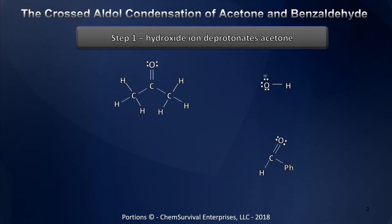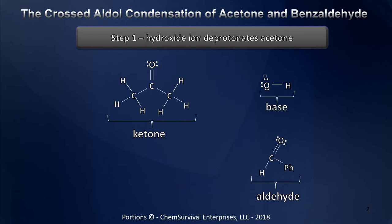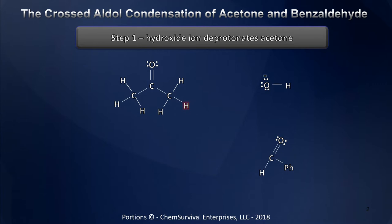Any crossed aldol condensation is going to have a certain cast of characters, including two carbonyl compounds. In my example I have a ketone and an aldehyde, and we're also going to need a catalyst — here I'm going to use a base. So this is a base-catalyzed crossed aldol condensation. Specifically my reagents are going to be acetone, benzaldehyde with its aromatic group shown here as a Ph, and hydroxide as my base.